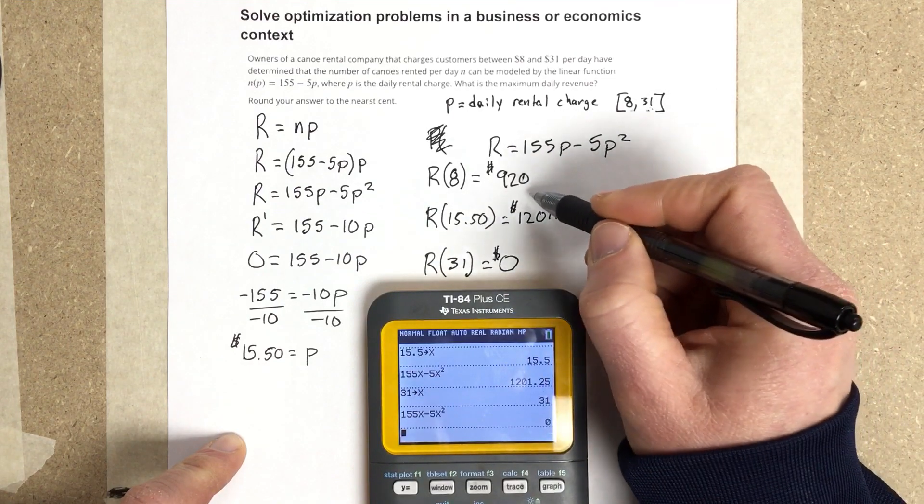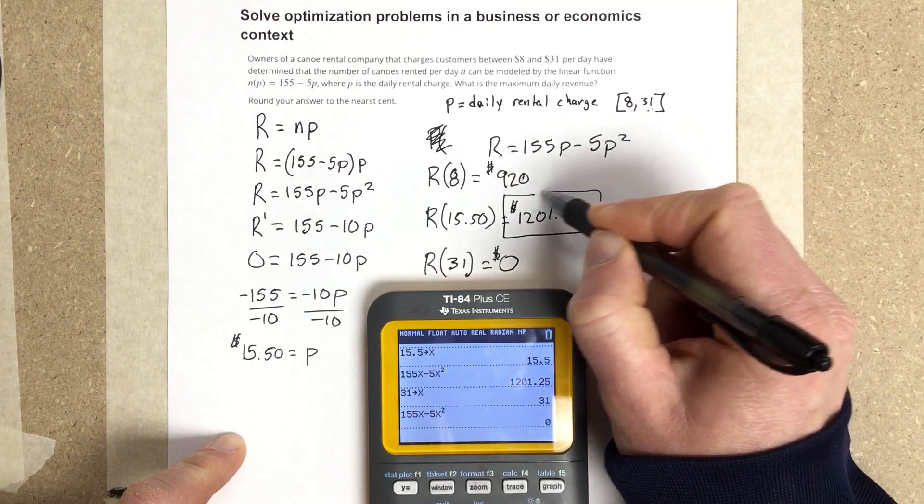So our max revenue is going to be $1,201.25.